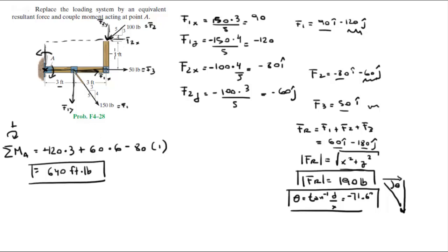Now notice that this is creating a moment, this is creating a moment. This is not creating a moment because it's aiming straight away from A. F of 1 of X is also not creating a moment because it's aiming straight away from A, and F of 1 of Y is creating a moment. So final answer for the moment, final answer for the magnitude of the resultant force, final answer for the angle of that resultant force.